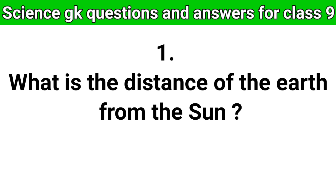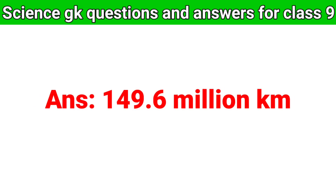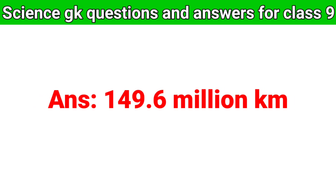Q1. What is the distance of the earth from the Sun? Answer: 149.6 million km.